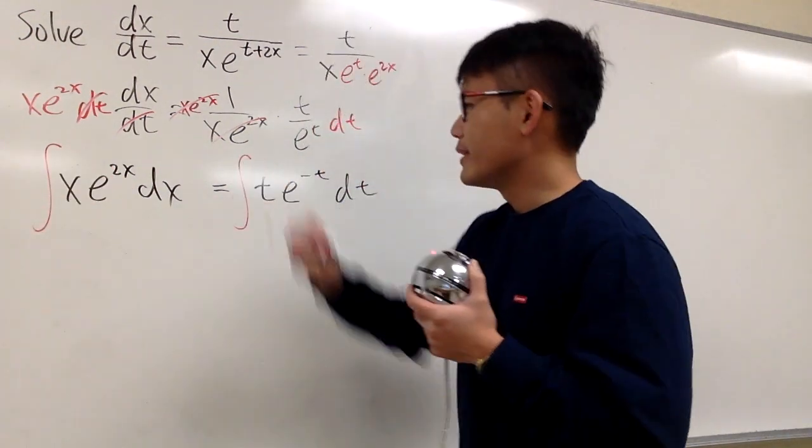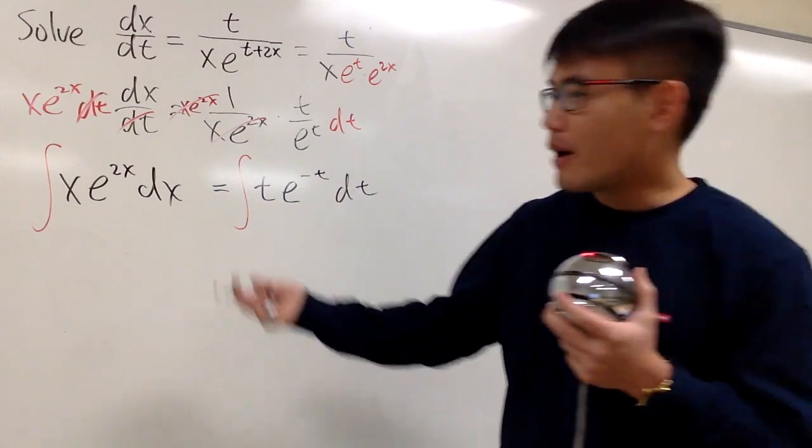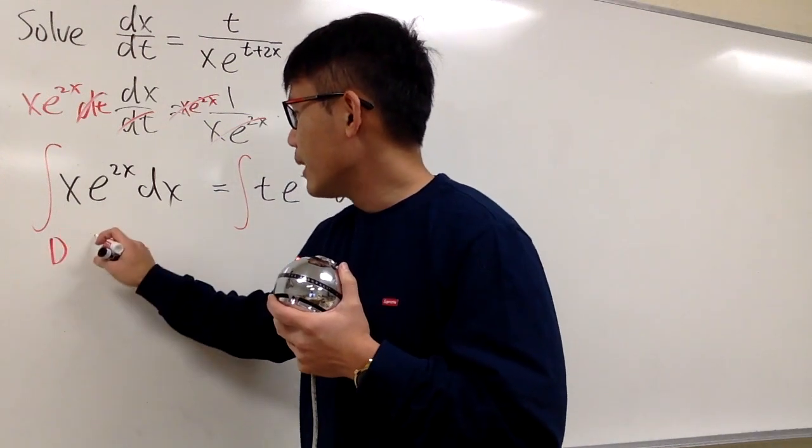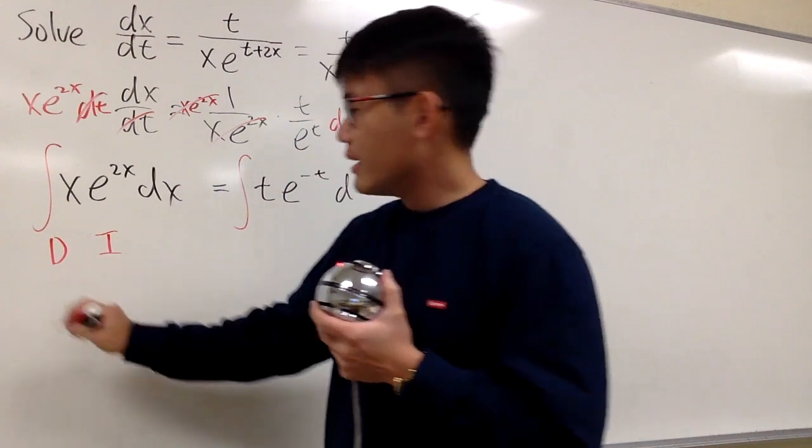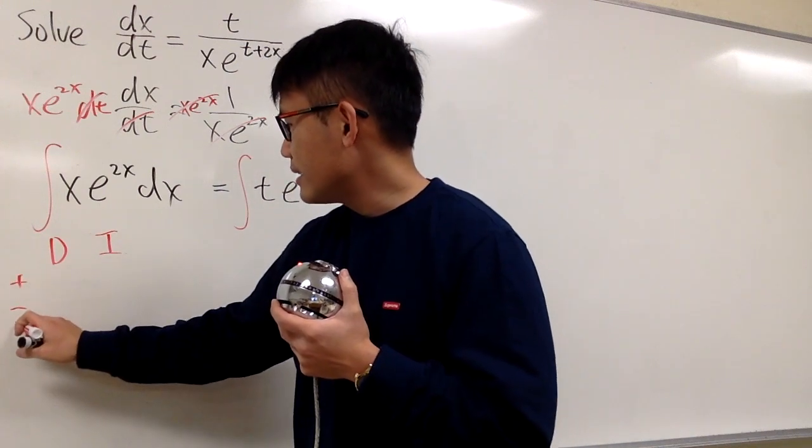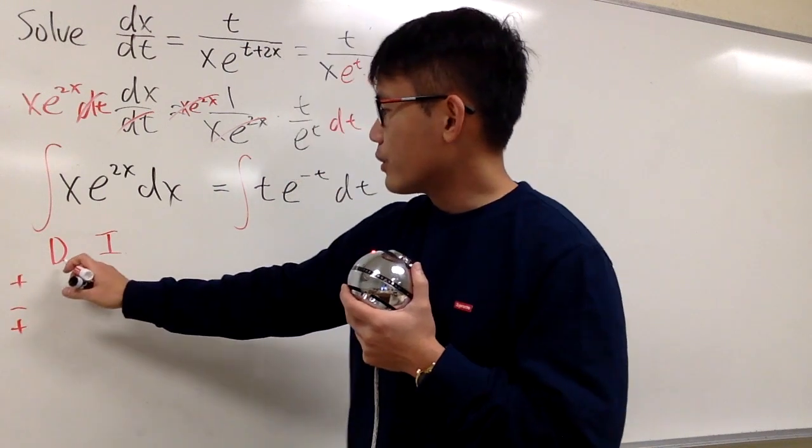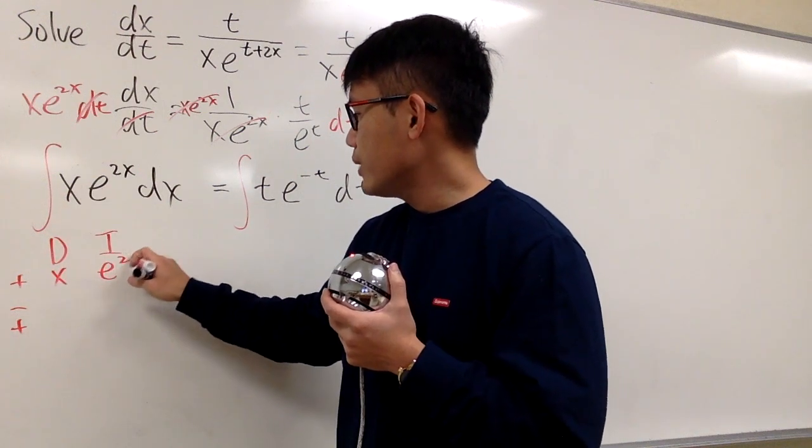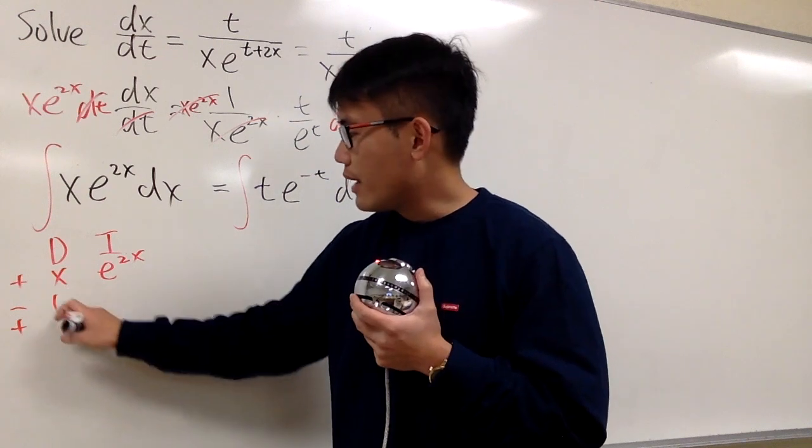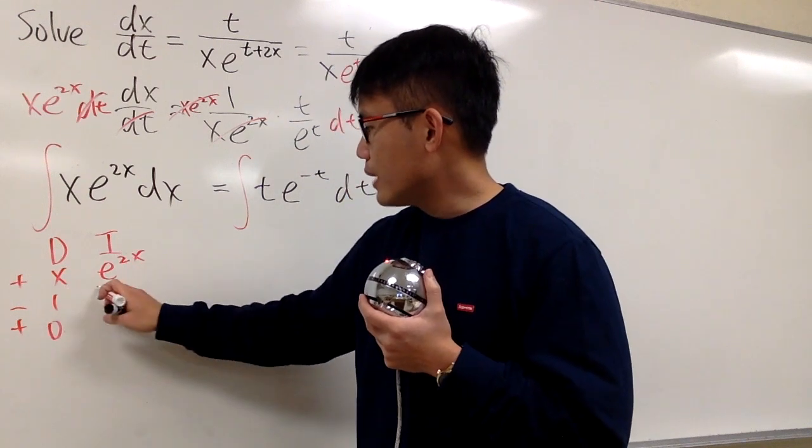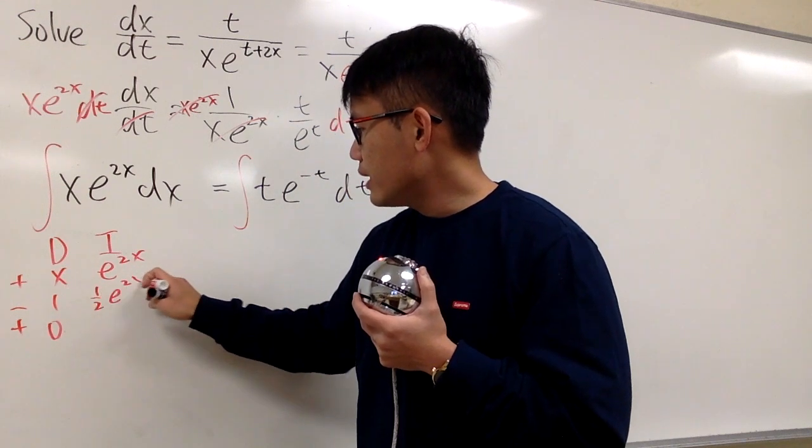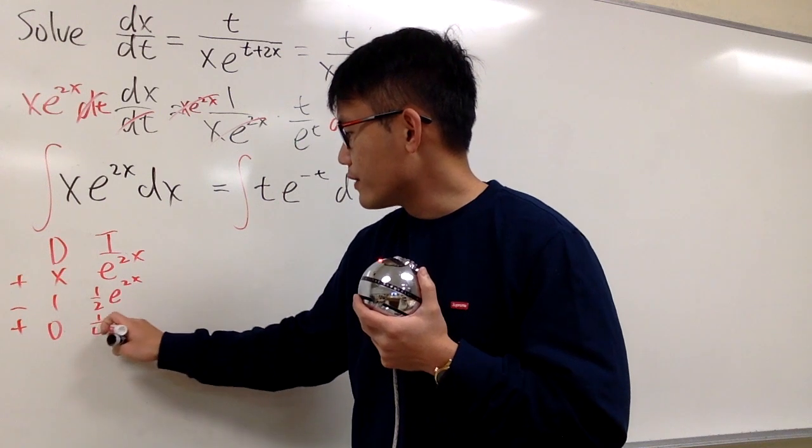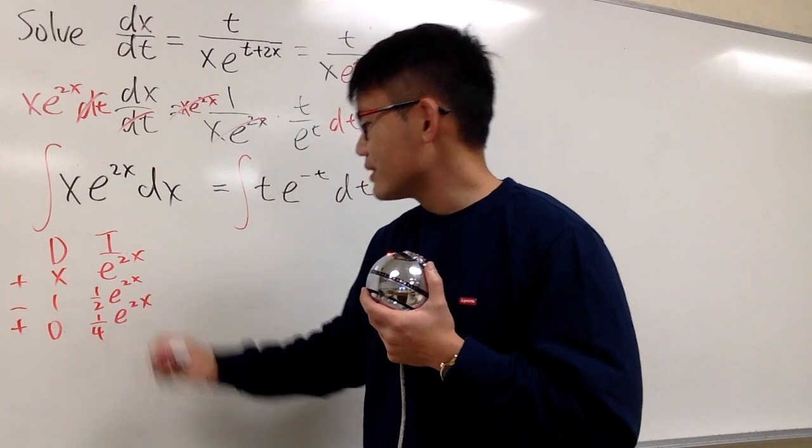So integrate this, integrate that. And the best way to do integration by parts is to use the DI method. I will do the DI method right here real quick. Plus minus on the side. I think I need three of them. So let's put the D right here as dx. And then I, let's integrate e to the 2x. To differentiate x, we get 1 and then 0. To integrate this, we have 1 half e to the 2x. And then integrate it again, we have 1 over 4 e to the 2x.